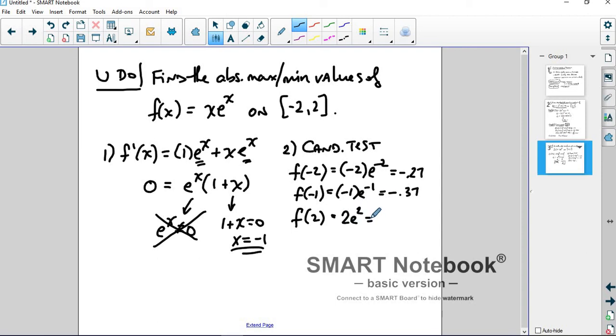So this is your maximum by far. This is smaller, it's more negative, so that's the minimum.